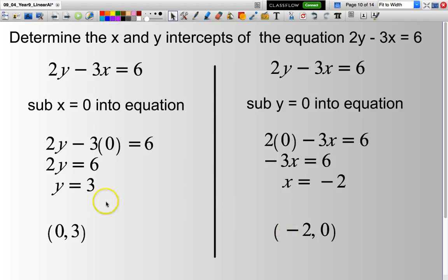I can then use the coordinates (0, 3) and (-2, 0). Identify both of those on the Cartesian plane. Draw a line straight through those. And that's done.